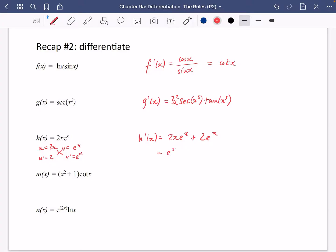And you might like to factorise that. So you have e to the x times 2x plus 2, or equally you could have done 2e to the x times x plus 1. Any of those answers are pretty good.